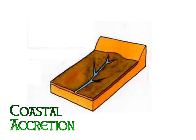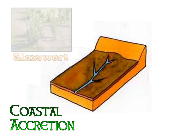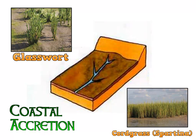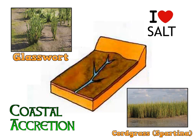The plants that start to colonise we call pioneer plants — these are the first ones to come onto the marsh. They tend to be things like glasswort and cord grass, otherwise known as spartina. These plants love salt — what we call halophytic — and are capable of staying underwater for several hours a day.